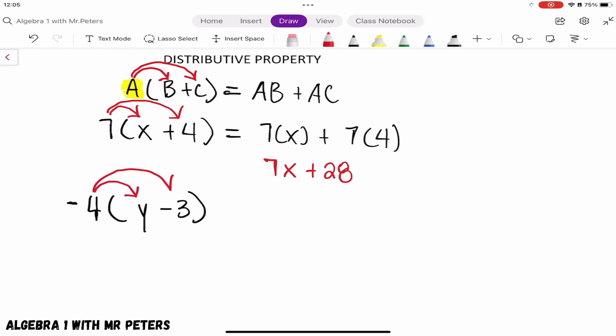-4 times y and then -4 times -3. What happens a lot of times is people think you're going to do -4 minus 3. No - remember this is the distributive property, so we're multiplying. Once we write this out, we should have -4 times y, which gives us -4y.